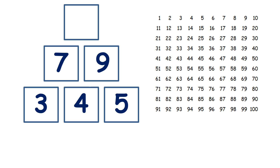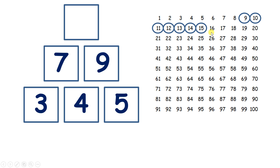Now we need to add seven and nine to find our top square. So if we start on nine and we count on one, two, three, four, five, six, seven, that takes us to 16.